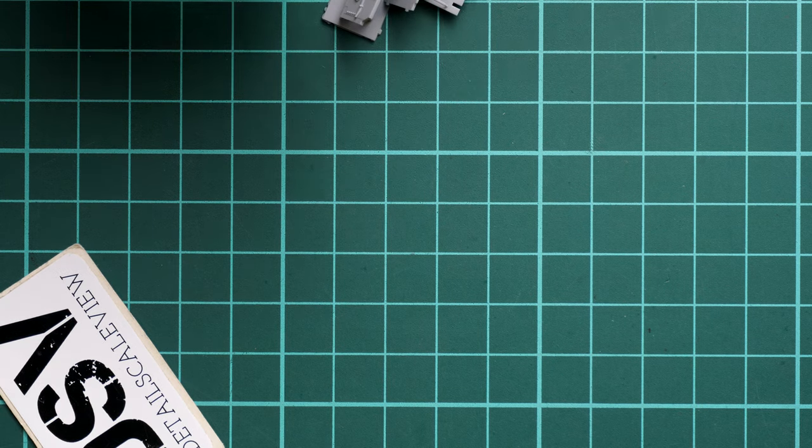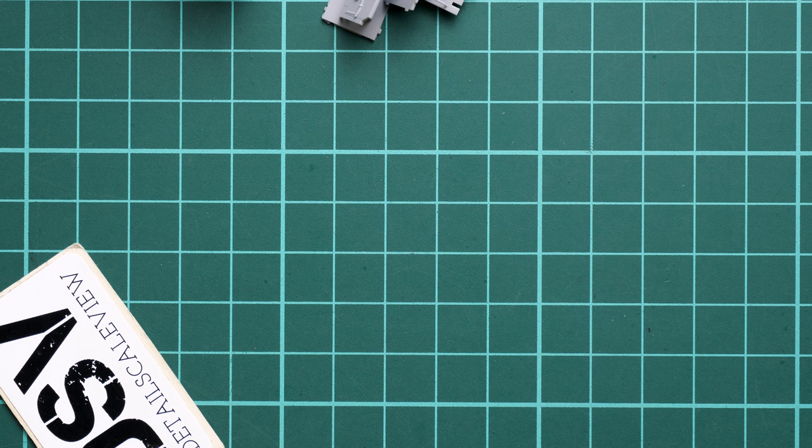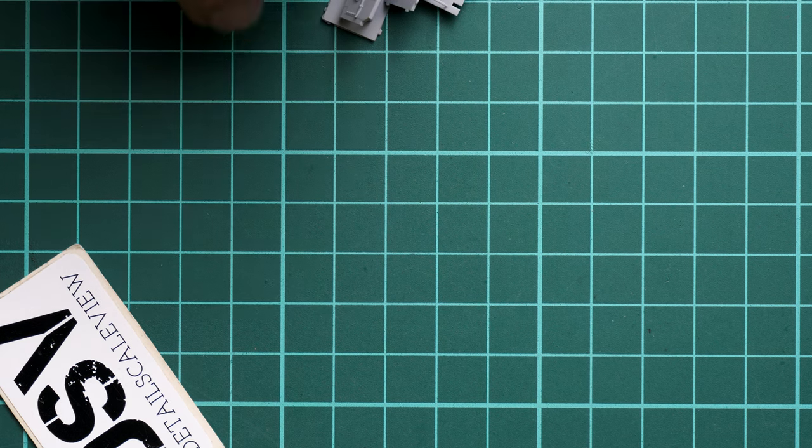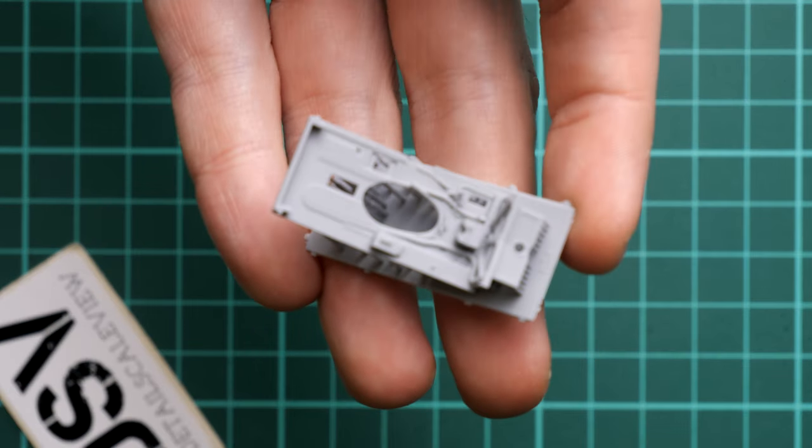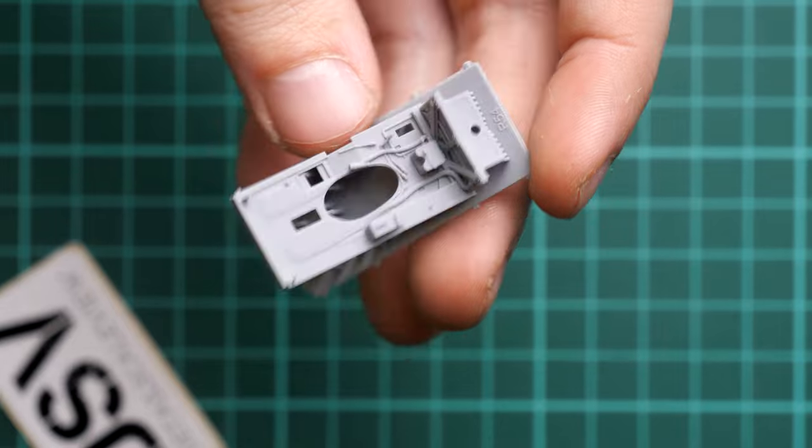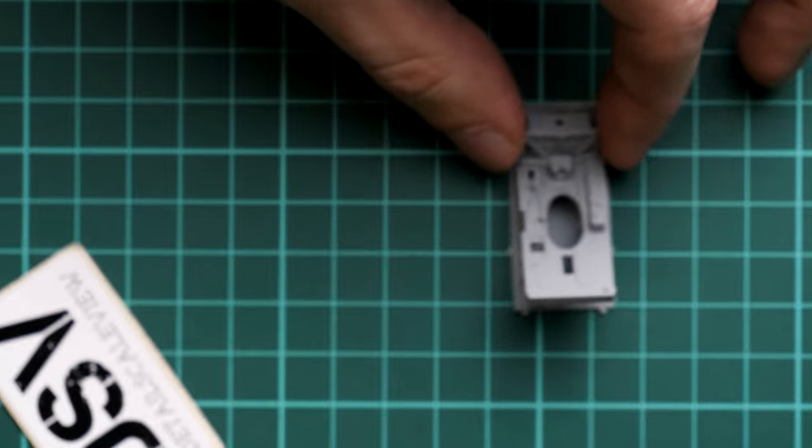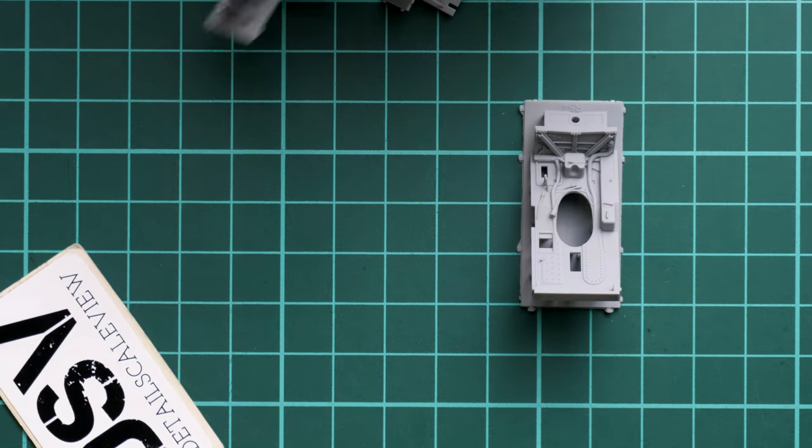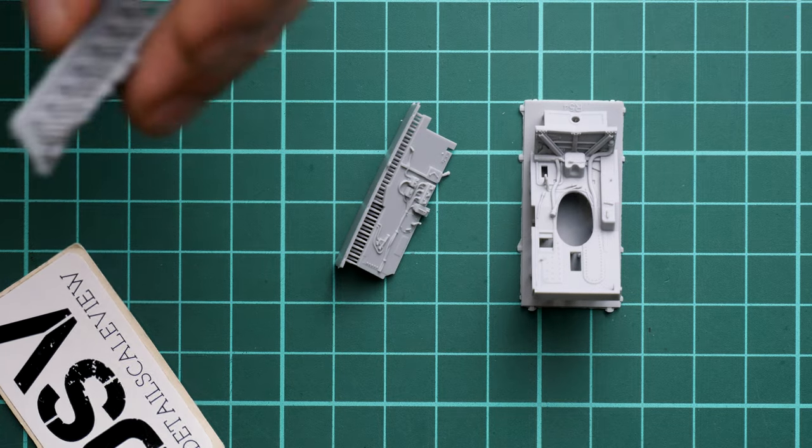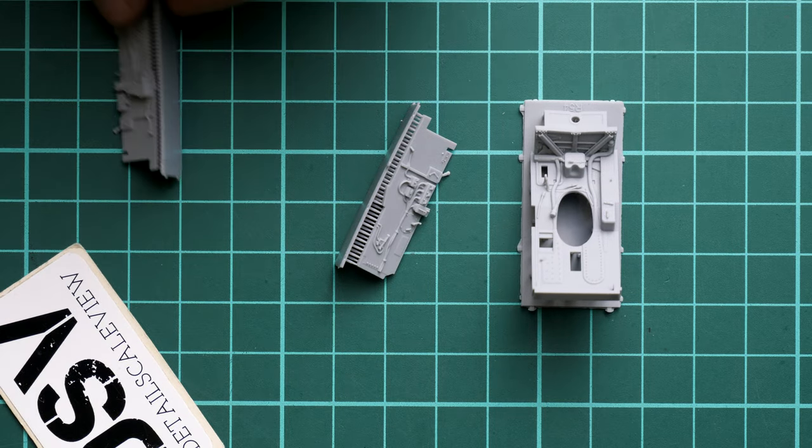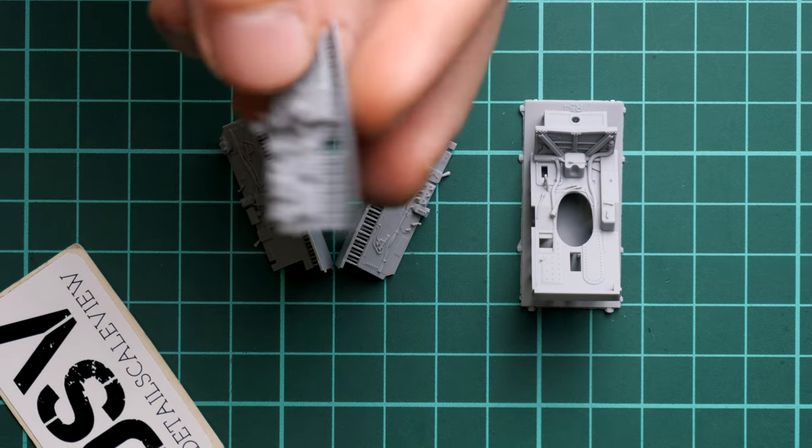Next we continue with the third plastic bag. Here we have the final set of parts, and these are the biggest ones because we get the cockpit floor and cockpit walls. Let's start with the cockpit floor. Again, we get a single piece part and it looks great—a perfect candidate for some washing and weathering. Next we continue with the cockpit walls.